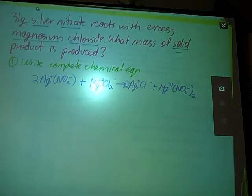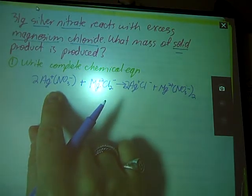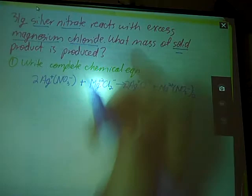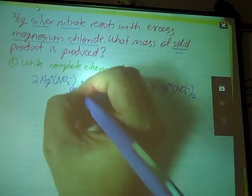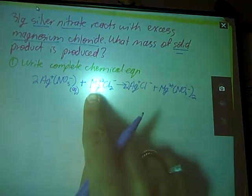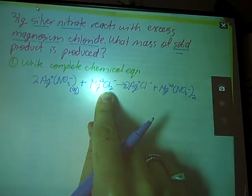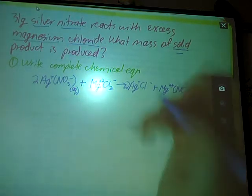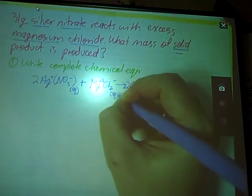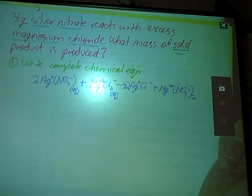Last thing we need are our solubility rules. Again, we're assuming this is happening in water, unless told otherwise. Silver nitrate, according to rule two, says all nitrates are soluble. Breaks into ions, don't care. Magnesium chloride, according to rule three, metal with a halogen that's not silver, mercury, or lead, is soluble. Breaks into ions, don't care.